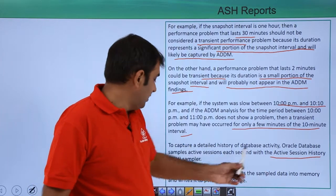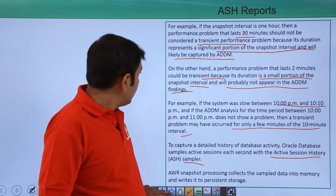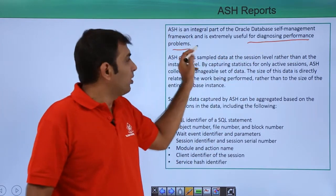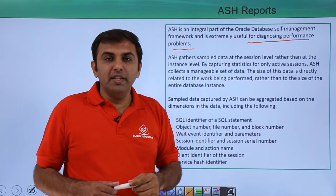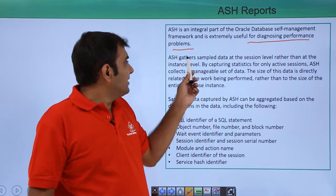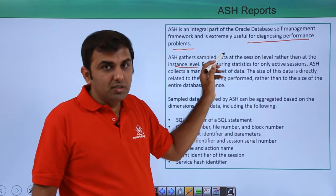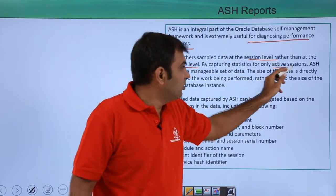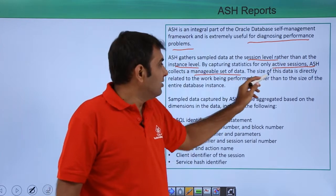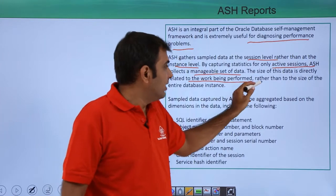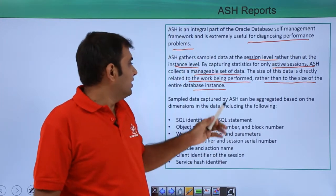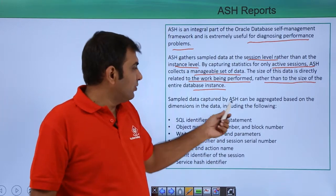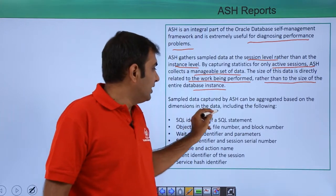AWR snapshot processing collects the sample data into memory and writes it to persistent storage. ASH is an integral part of the Oracle database self-management framework and is extremely useful for diagnosing performance problems. Whatever issues are not recorded in ADDM, you can identify with ASH. ASH gathers sample data at the session level rather than at the instance level. By capturing statistics only for active sessions, it collects a manageable set of data. The size of this data is directly related to the work being performed, not to the size of the entire database instance.